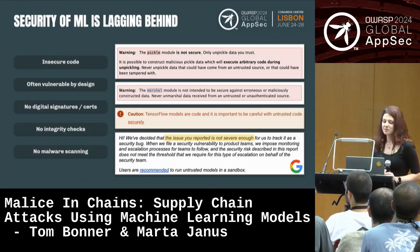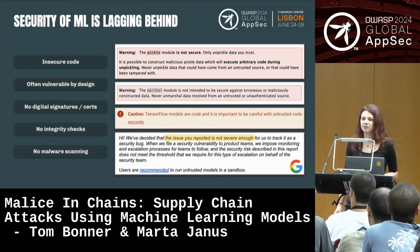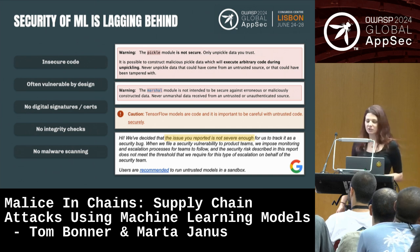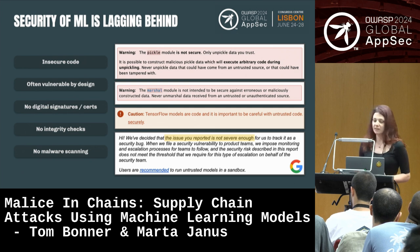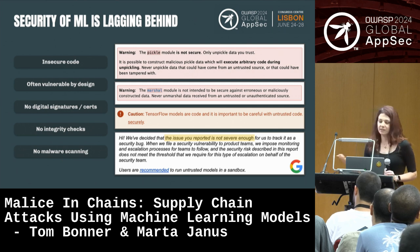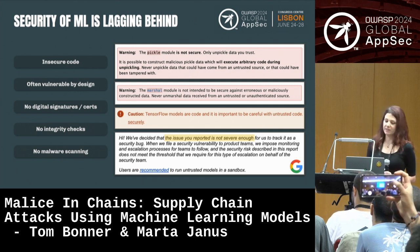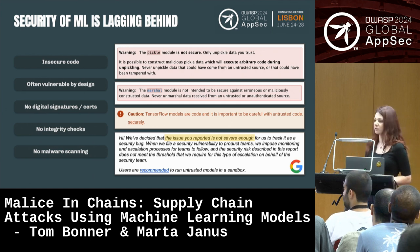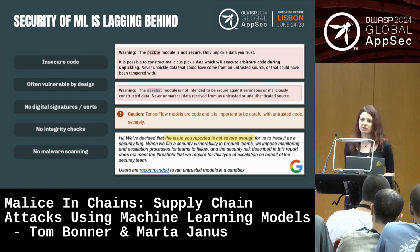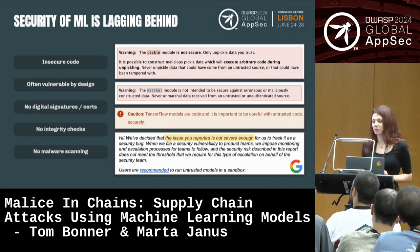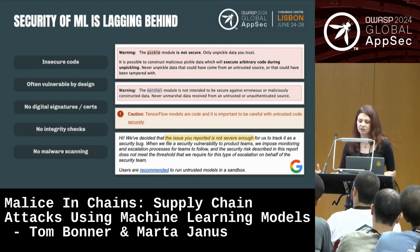Lots of companies are using those pre-trained models because it's easier, less time consuming, and cheaper to start building your own AI application based on an already trained model. Unfortunately, those repositories are not very well protected at the moment, and machine learning models are not protected at all. Machine learning security right now is like the security of software in the 1990s. There are no signatures, no digital certificates for machine learning artifacts — nothing is signed. There are barely any integrity checks; sometimes you get a checksum of a model and that's it. But people are not really used to checking those either. There is no malware scanning for machine learning models, because current anti-malware solutions usually don't even touch them — some models can be more than 100 gigabytes, and scanning something like that for malicious code is tedious.